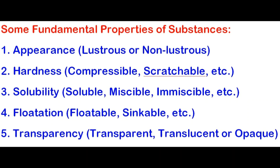The second fundamental quality is hardness. Everything solid is somewhat hard. But some solids are compressible, like sponge and cotton wool. Some are scratchable — usually wood is scratchable; you can scratch your name on a wooden desk. Third is solubility. Sugar is completely soluble in water, but sand is not. When two liquids dissolve completely in each other, we call them miscible. When two liquids like oil and water do not dissolve in each other, they are immiscible — the oil floats to the top.